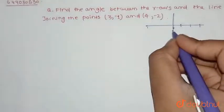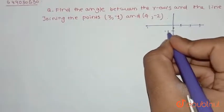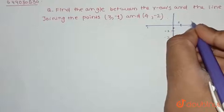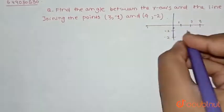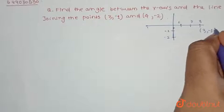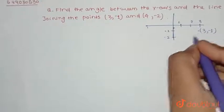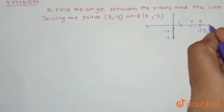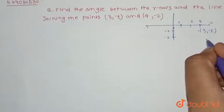These are the points: this is -1, -2, this is 1, 2, 3. So this is (3, -1) and the second point is (4, -2).